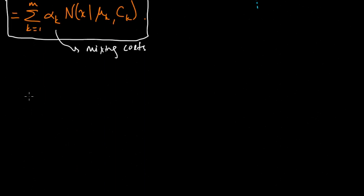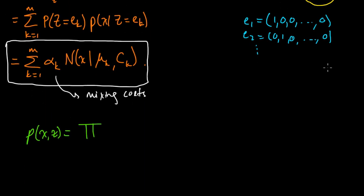So, of course, in general, the joint distribution on X and Z always tends to be useful. And this is, well, we wrote it here, right? It was just this, if Z was equal to EK. But we can write this as the product of all Ks of alpha K to the ZK. This is the Kth element of Z, which is going to be 1 if Z equals EK and 0 otherwise,